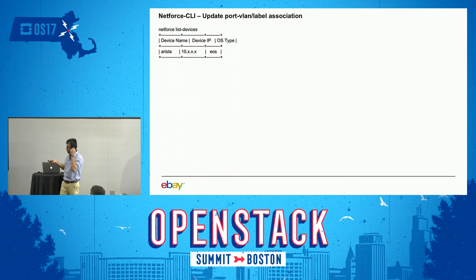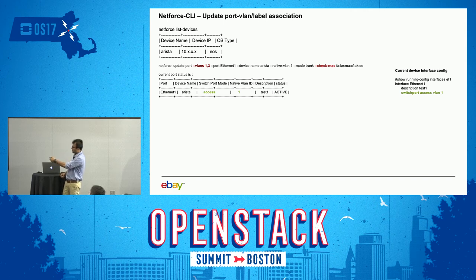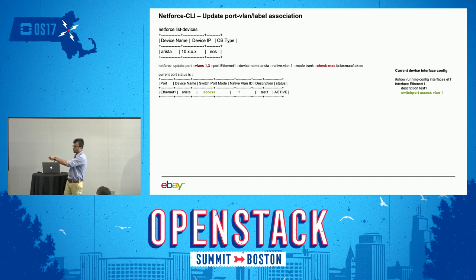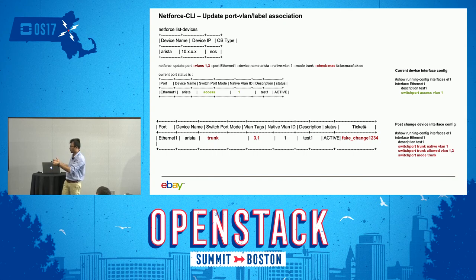CLI is pretty cool — we just have some base support for it. You can list devices. When Ironic does update port, it calls update port, you give the VLANs and check MAC. The device configuration is fetched live from the device, not from the database, because a network engineer wants to ensure no conflict — someone could log into the switch and change the configuration. You always fetch the current state. After update, you can see it got updated to one trunk, and there's a trace ticket that stamps the current as well as the rollback status if something breaks.